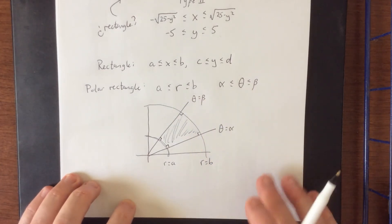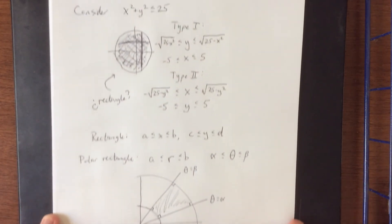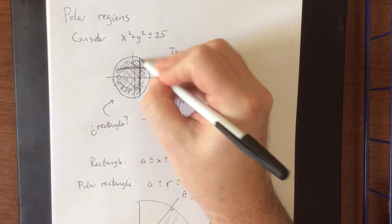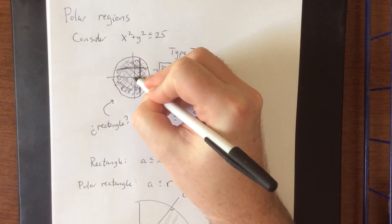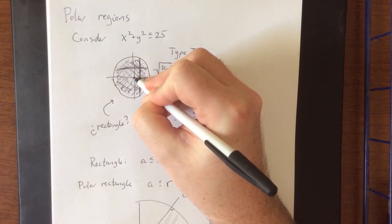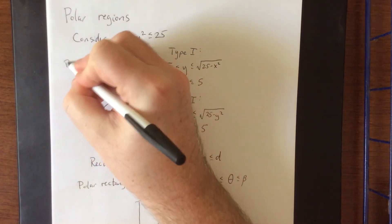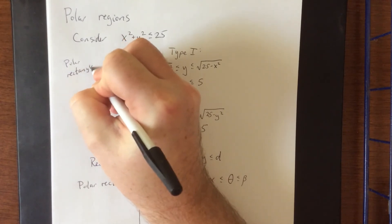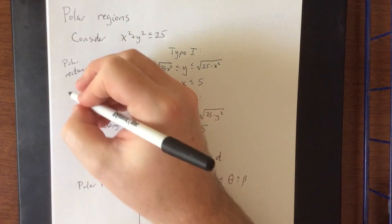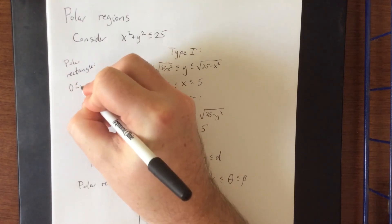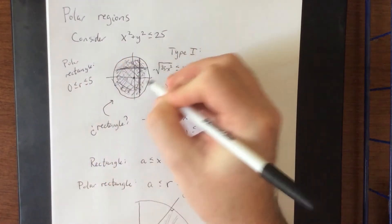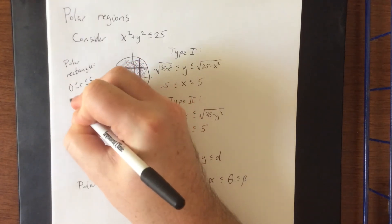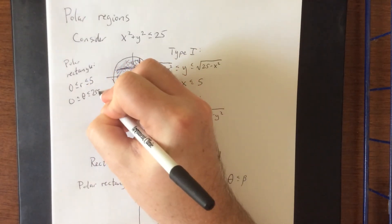Now, how does that pertain to what we talked about back at the beginning of the problem? Well, if a region is circular in nature, that means that we could define the pole to be the inner bound and this circle to be the outer bound. So as a polar rectangle, we could consider this disk to be comprised of the following. r can be defined as being between 0 and 5, the radius of the disk.